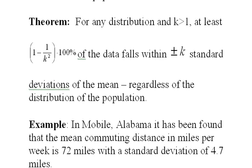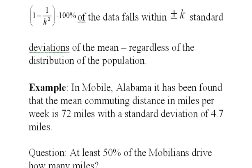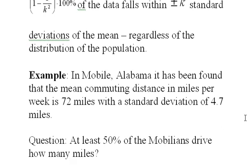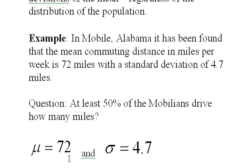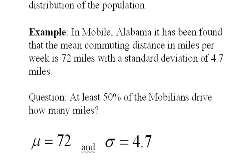We were looking last time at this example in Mobile, Alabama. It has been found that the mean commuting distance in miles per week is 72 miles with a standard deviation of 4.7 miles. And here we ask the other question: At least 50% of the Mobilians drive how many miles? In other words, we're given the percentage but we don't know the interval. We know that the mean number of miles they drive is 72 and sigma is 4.7, that's the standard deviation.